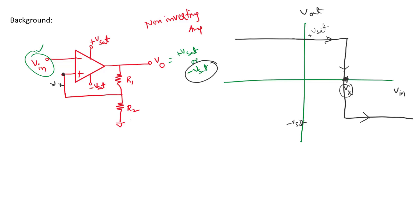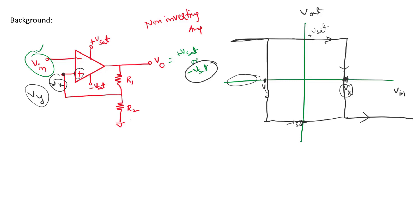Now consider the case where the output is at minus Vsat. Applying the voltage division rule, some voltage Vy appears at the positive input node, and this Vy will be a negative voltage. When V_in is less than Vy, the positive terminal voltage is more positive, which brings the output back to positive Vsat.